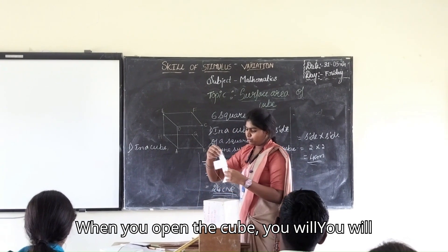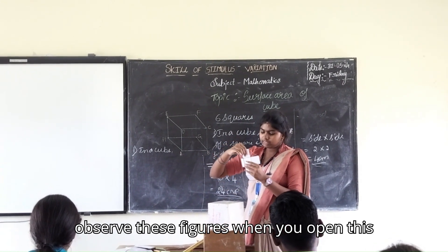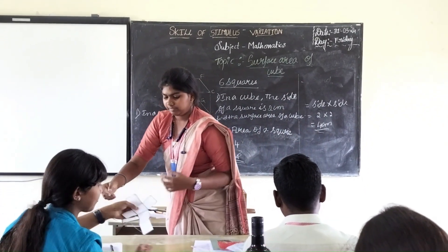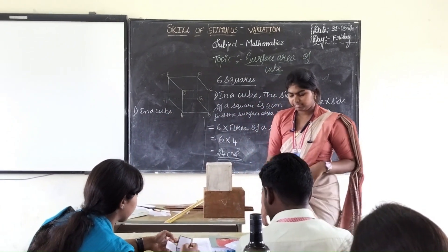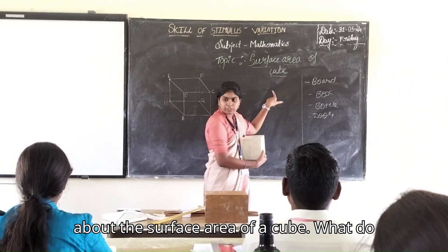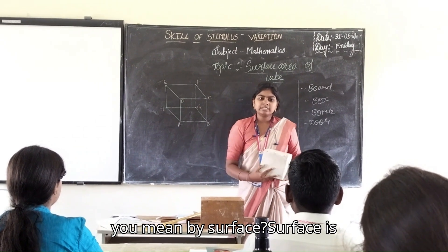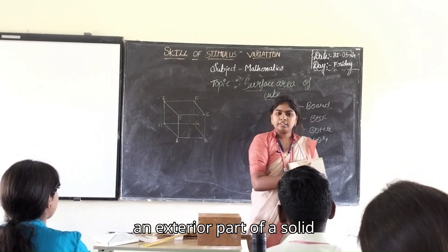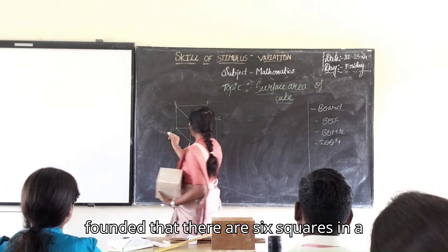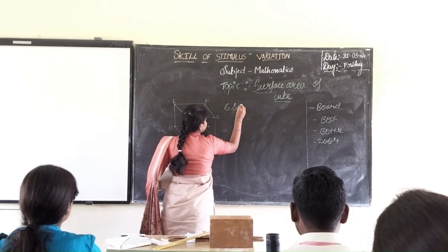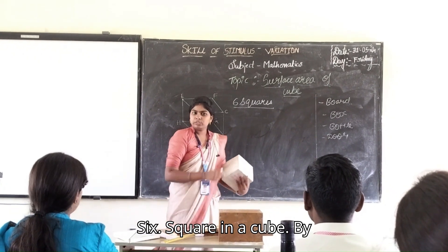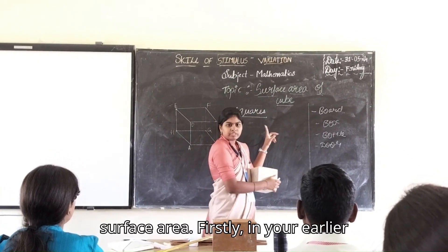When you open the cube, you will observe these figures. Okay. Observe this. Today we are learning about the surface area of a cube. What do you mean by surface? Surface is an exterior part of a solid figure, right? We have counted that there are 6 squares in a cube, right? 6 squares in a cube.